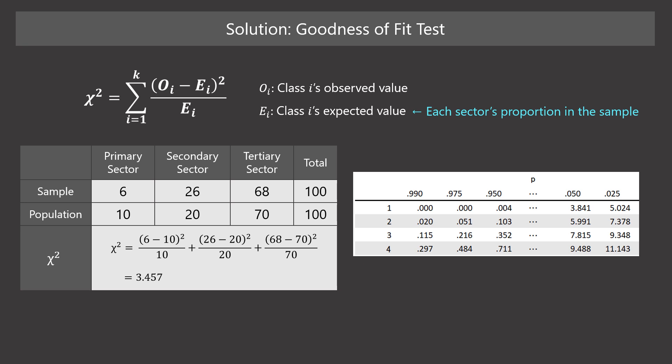Next, we use a Chi-Squared distribution table to determine whether we can reject the null hypothesis or not. Here, we have three classes, so the degree of freedom is 2. The goodness of fit test should be implemented as a one-tailed test. The intersection shows 5.991, which is larger than the Chi-Squared we got. So we cannot reject the null hypothesis.